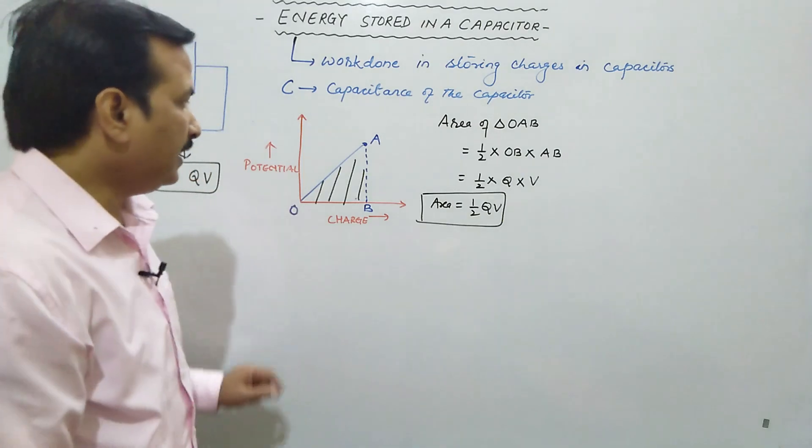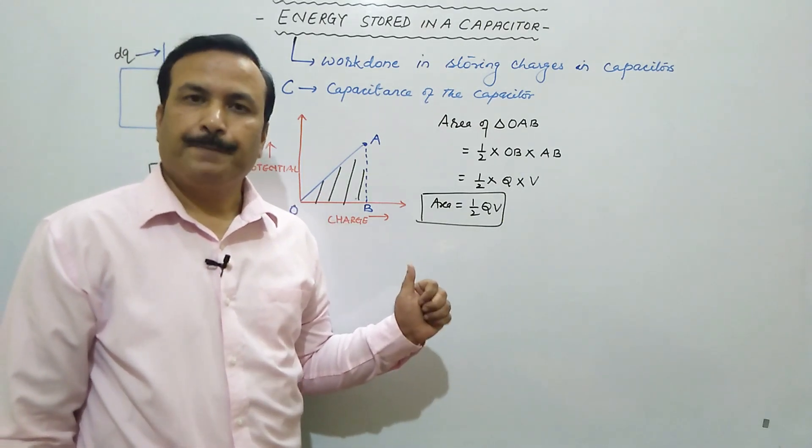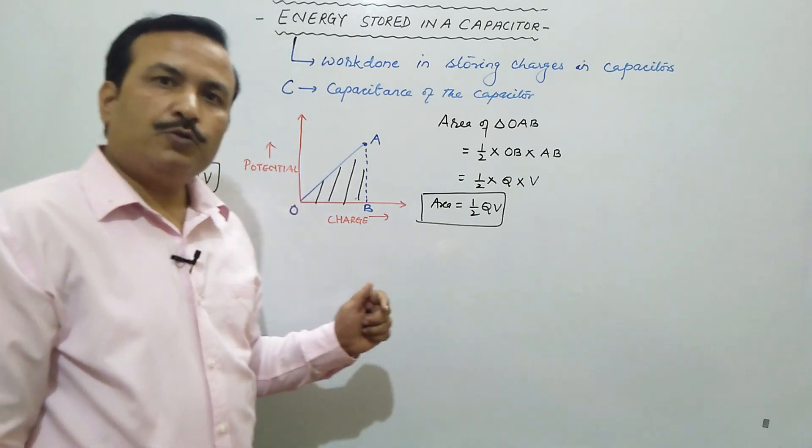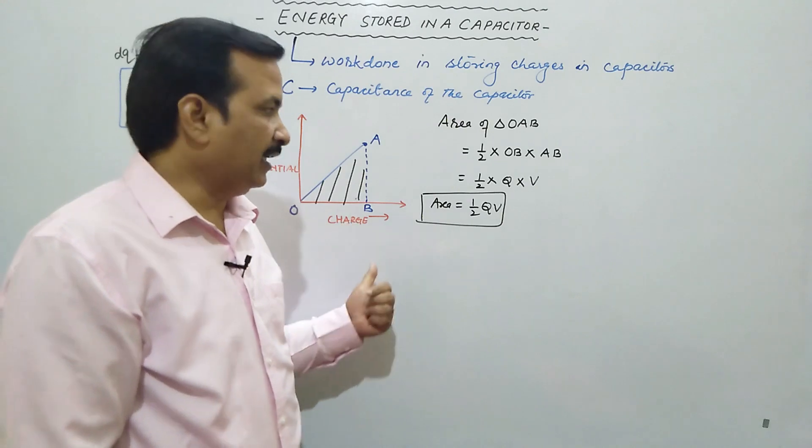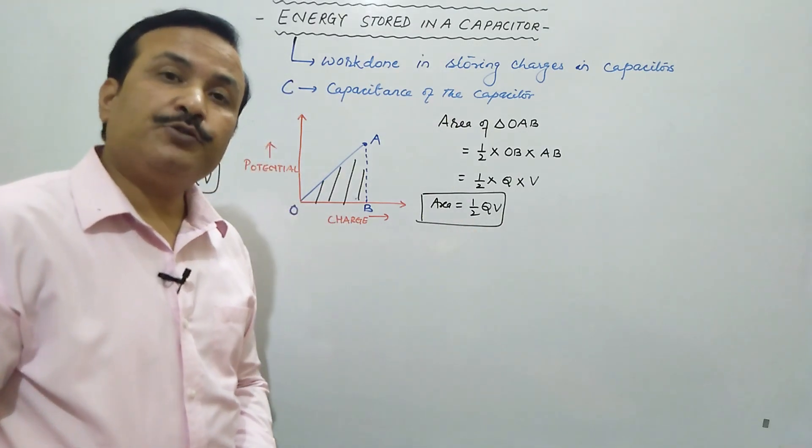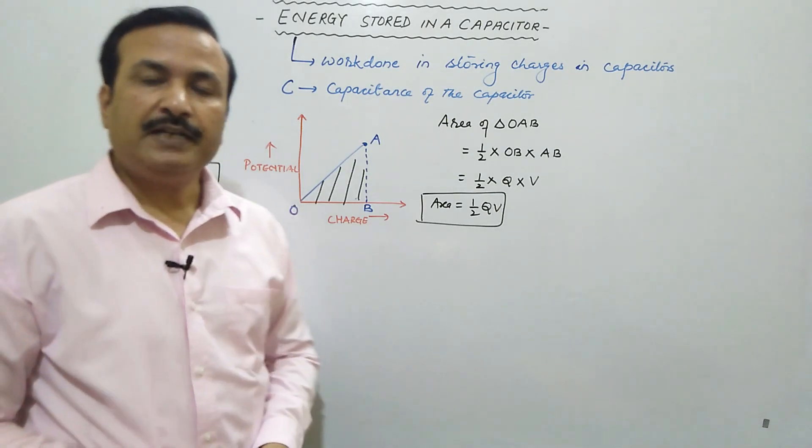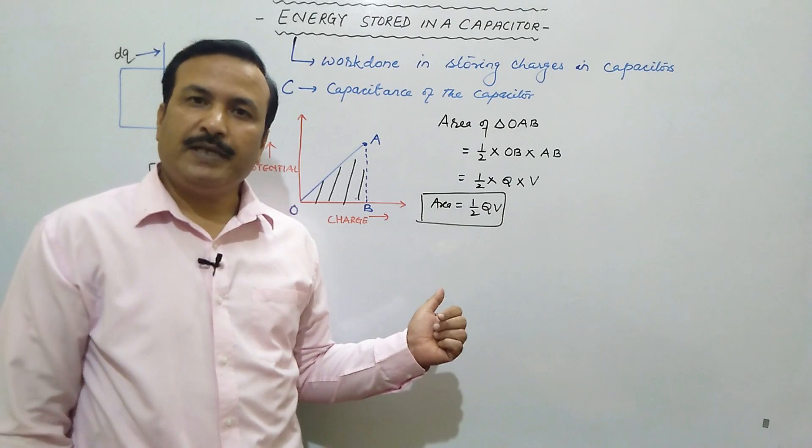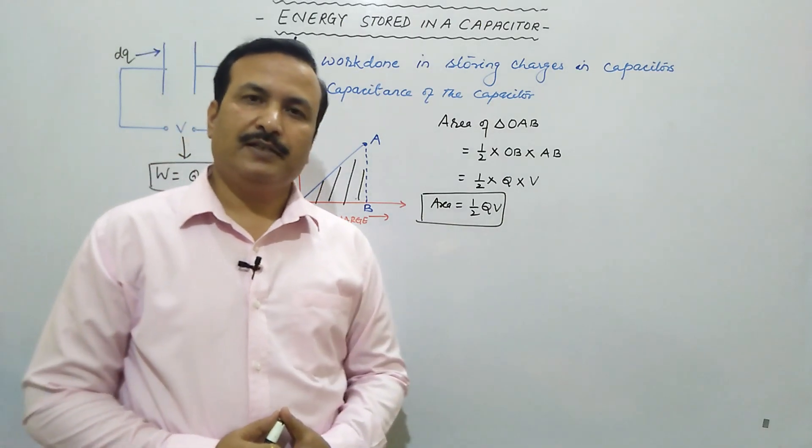And we already know this is nothing but energy stored. So we are getting area of this triangle is equal to energy stored in the capacitor. This means if we draw the graph between potential and charge and find the area between them, the area under the curve, if we find out, that will be numerically equal to potential energy of the capacitor. This finishes with today's topic. We will come with few more topics in the next video. Thank you children.